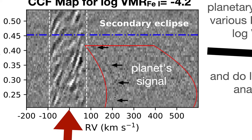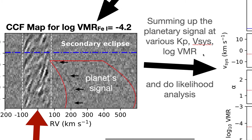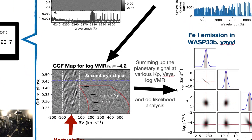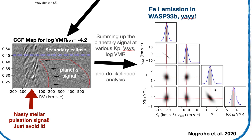To be sure, we sum up the cross-correlation function at the planetary rest frame, assuming various values of orbital velocity (Kp) and systemic velocity, and for various log-VMR, which is the abundance of neutral iron. After that, we performed a likelihood analysis. This is the result: we detected neutral iron emission at the expected planetary velocity. We also found that the signal is actually 1.3 times stronger than our template, and we were also able to constrain the abundance of neutral iron, though this is only correct for the atmospheric model that we use.